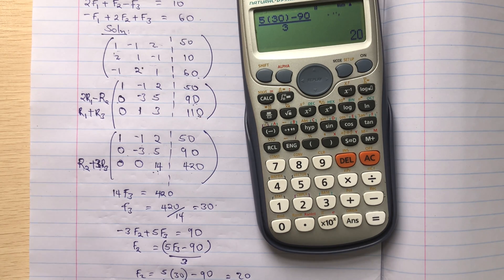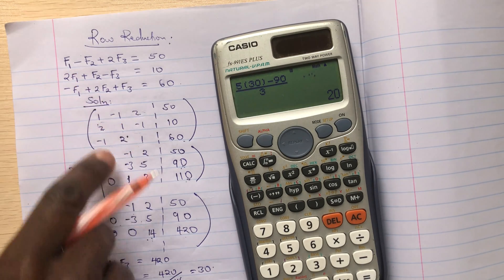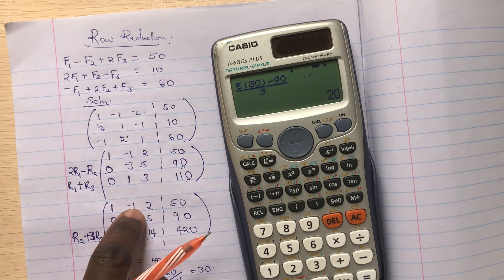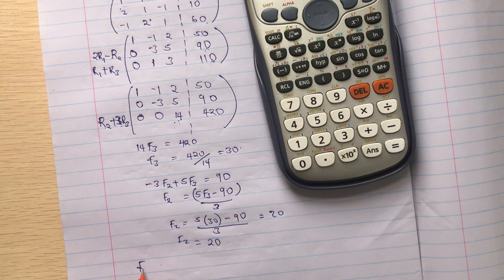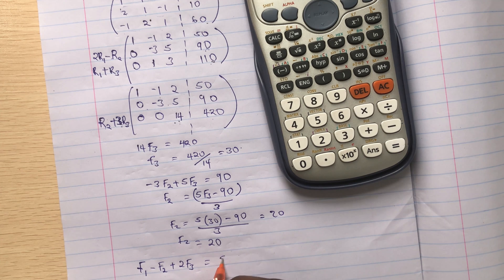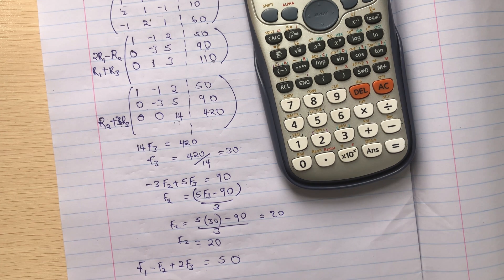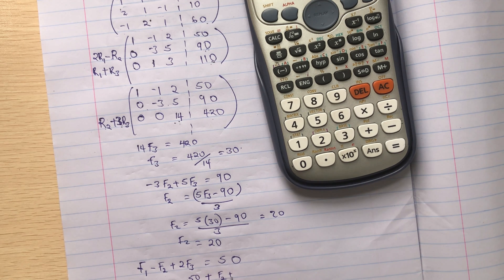So that means back to our first equation here, we can get F1. It's the same thing as here. So I'll get F1 minus F2 plus twice F3 equals to 50.